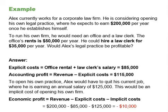However, to open his own practice, Alex would have to quit his current job where he earns an annual salary of $125,000 — this would be an implicit cost. The economic profit is revenue minus explicit cost minus implicit cost: $200,000 minus $85,000 minus $125,000 equals negative $10,000. So Alex would be losing $10,000 per year. That does not mean he would not want to open his own business, but he would be earning $10,000 less than if he stayed at the corporate firm. Implicit costs can include other things as well, such as lost leisure time.